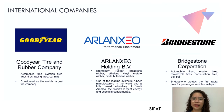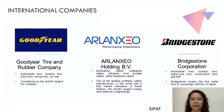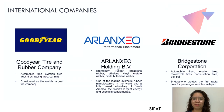Next is Arlanxeo Holding B.V., widely regarded as one of the world's top synthetic rubber producers and a subsidiary of Saudi Aramco, the world's biggest energy and chemical conglomerate. They are involved in the development, production, and marketing of high-performance rubbers utilized in a variety of applications, with 20 manufacturing facilities in nine nations across four continents. Their most well-known products include bromobutyl rubber, butadiene rubber, ethylene vinyl acetate rubber, and nitrile butadiene rubber.